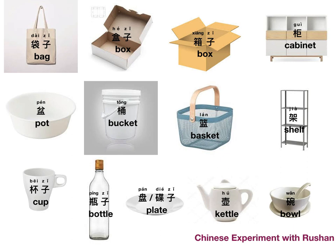The next containers are mostly related to food. 杯子 — cup. 瓶子 — a bottle. 盆子 or 碟子 — a plate. 壶 — a kettle. And 碗 — a bowl. And the final two: 柜, a cabinet, and 架, a shelf. These are more related to furniture.